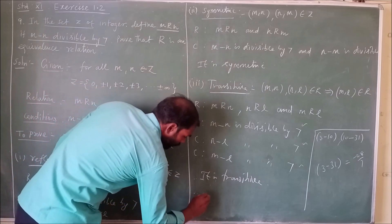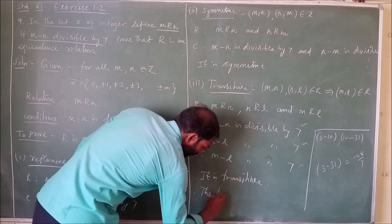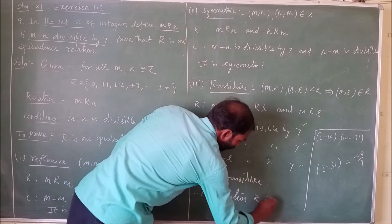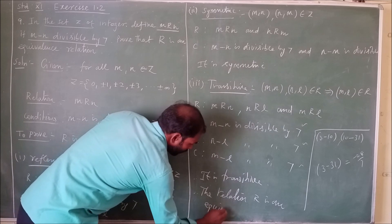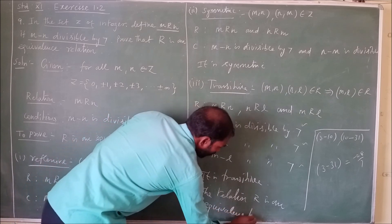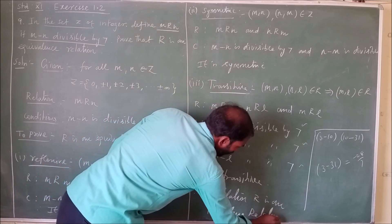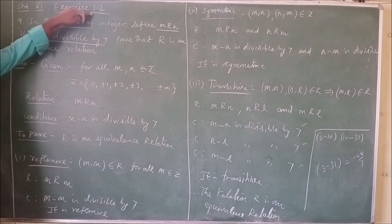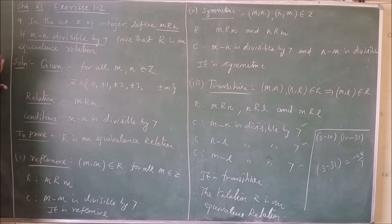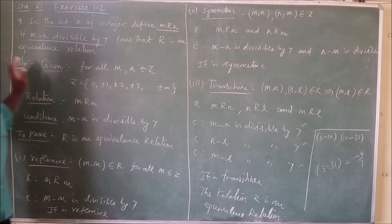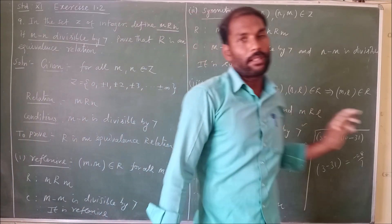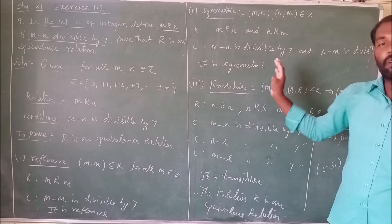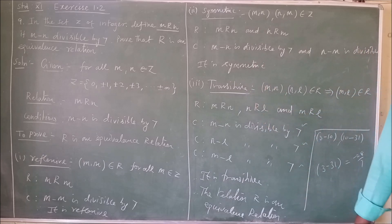Therefore, the given relation R is an equivalence relation. Exercise 1.2, problem 9 is now completed. The remaining two problems are your assignment problems. Thank you for watching — next exercise will be in the next class.